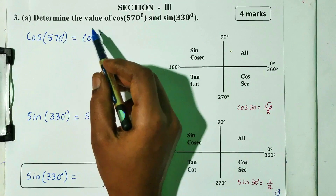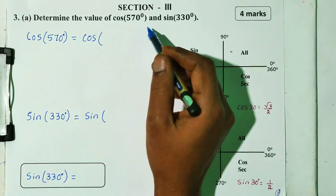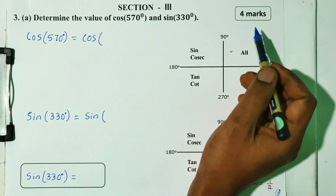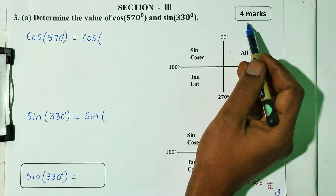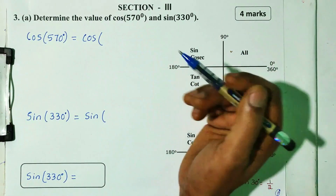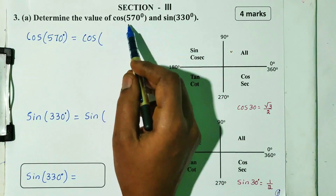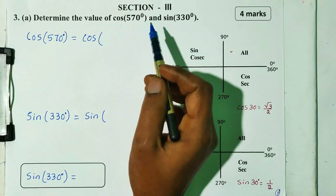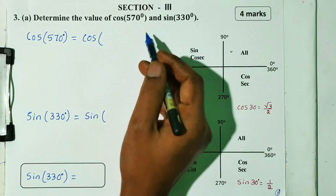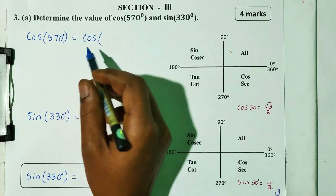Question number 3 is: determine the value of cos 570 and sin 3. First, cos 570. So, cos 570.